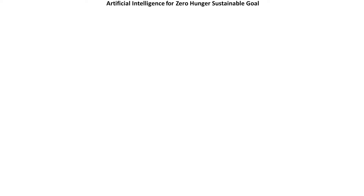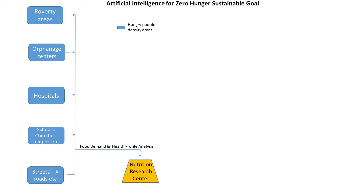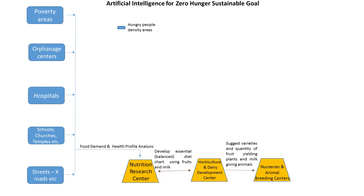Let me explain the applied AI model in this project using a PowerPoint diagram. Identification of hungry people and high-density areas is the first step. Food demand and health profile analysis is done by the Nutrition Research Center. The Nutrition Research Center develops an essential diet using fruits and milk, and the diet chart is sent to the Horticulture and Dairy Development Center.